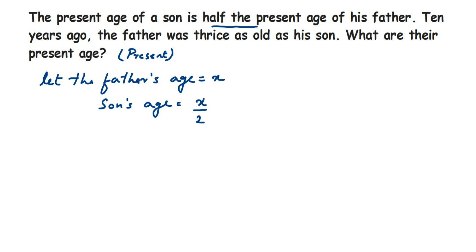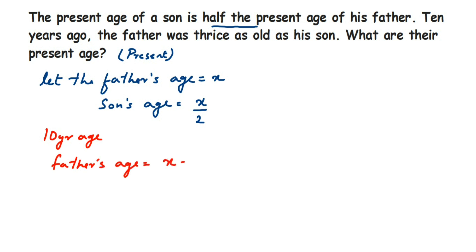Now they talk about 10 years ago. Since it's the past, we subtract 10 from the present ages. So 10 years ago, father's age = x − 10, and son's age = x/2 − 10.